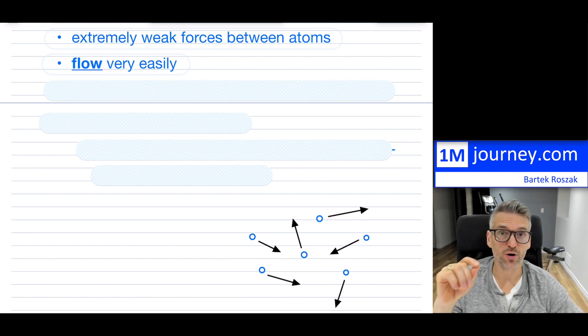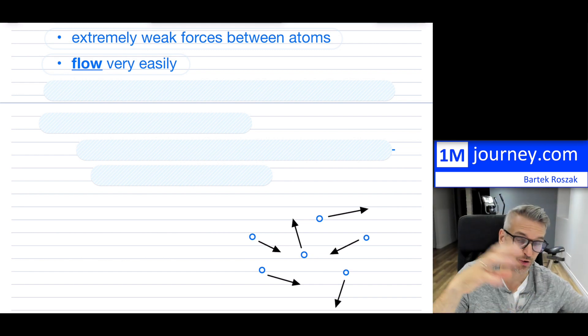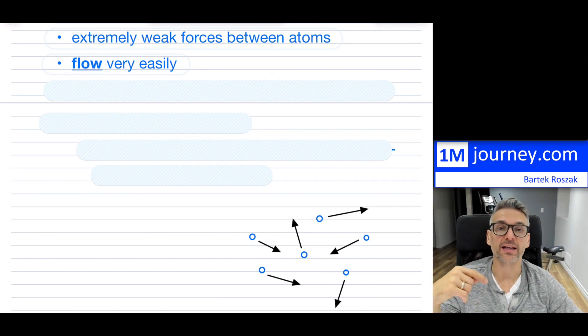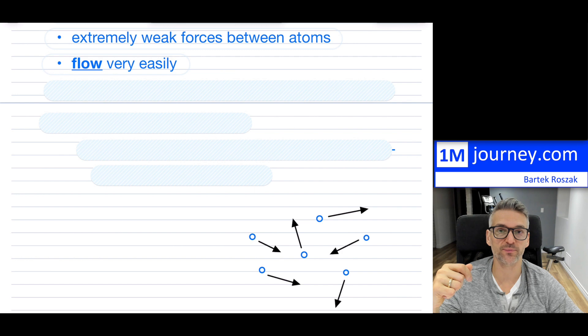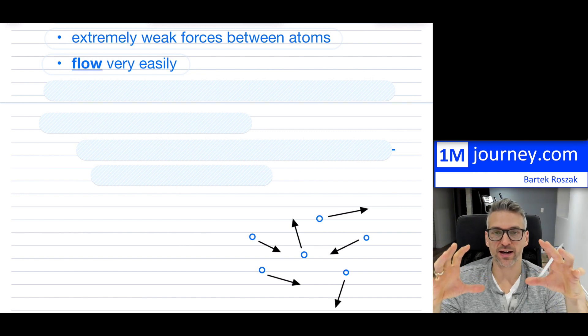So that brings up the idea that they do flow very easily. And because they do flow, right, so if you can take a gas and you can allow those particles to actually flow over each other, then we do consider in physics that to be a fluid. So gases are actually a fluid, and so are liquids. So those are the two. Solids are not because they keep their actual lattice form.